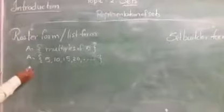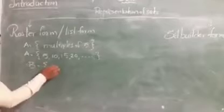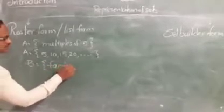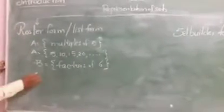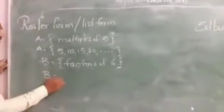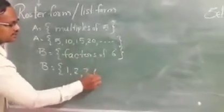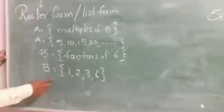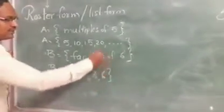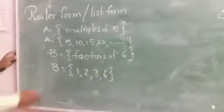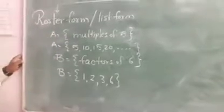We can find many more examples. Suppose B equals the set of factors of 6. The factors of 6 are 1, 2, 3, 6. These are the factors of 6. Here we list out all the elements of the set — writing a set by listing out all elements is known as roster form.